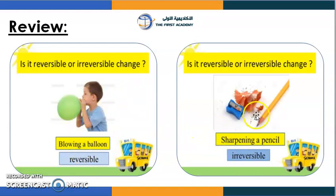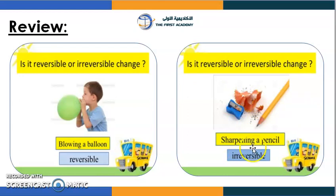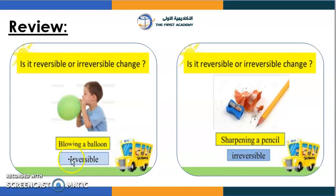In the next picture we have a pencil being sharpened. The shavings of the pencil can't be glued or stuck back onto it, and the pencil becomes shorter each time you sharpen it. So that's called irreversible — it only goes forward.